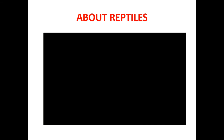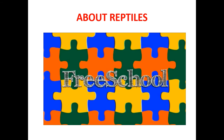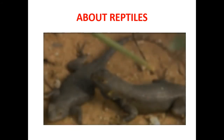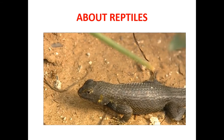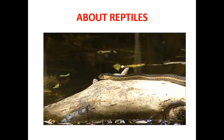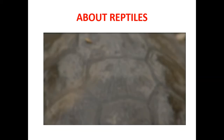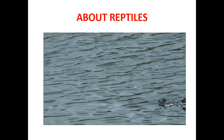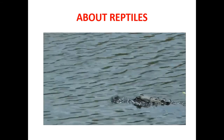Hi everyone, today we're going to learn about reptiles. Reptile is the name for a large group of animals. Reptiles are vertebrates, which means they have backbones. They are also cold-blooded, have scaly skin, and lay eggs. When we say that reptiles are cold-blooded, that does not mean that they are cold.